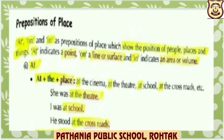Prepositions of place. At, on and in as prepositions of place show the position of people, places and things. At indicates a point. On indicates a line or surface, and in indicates an area or volume.